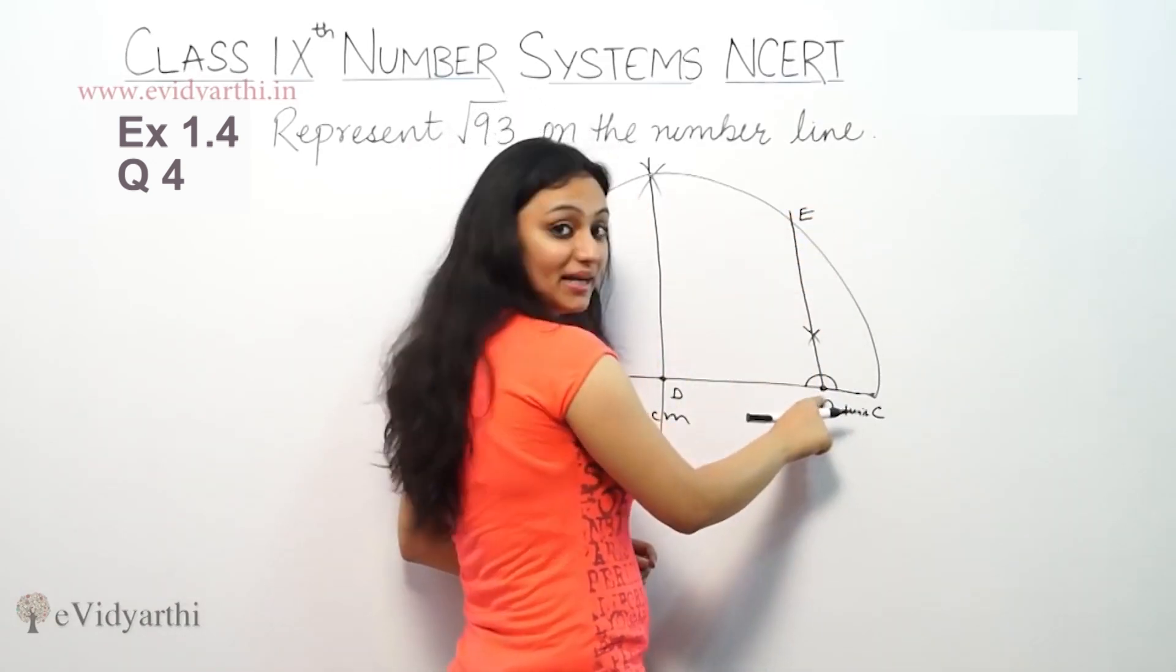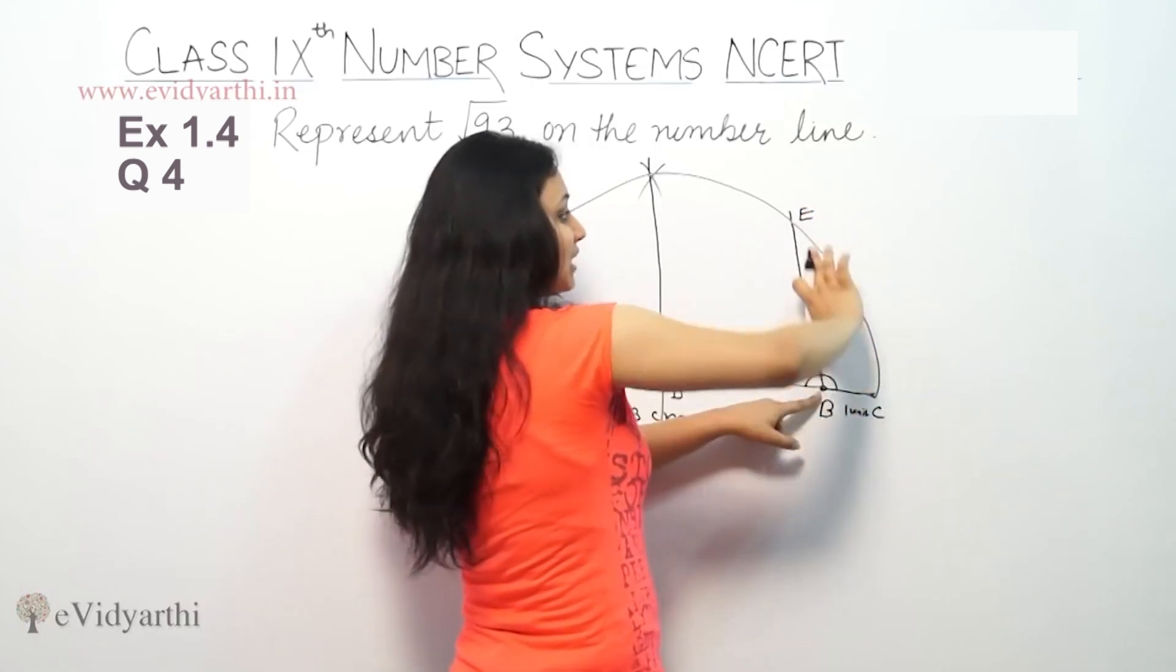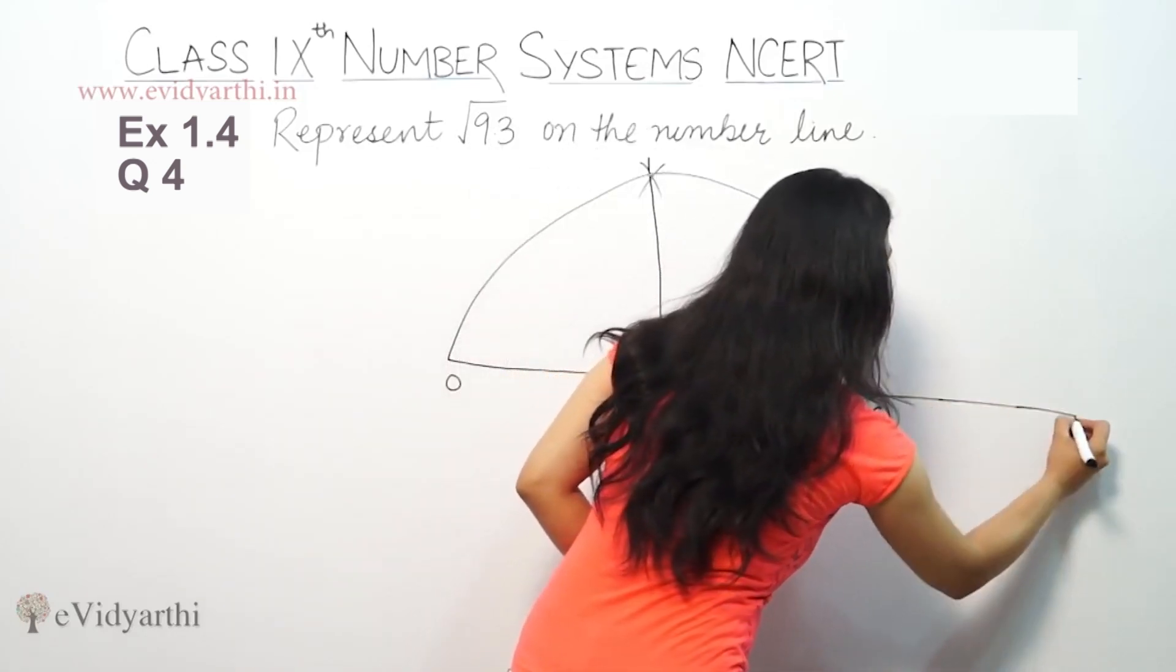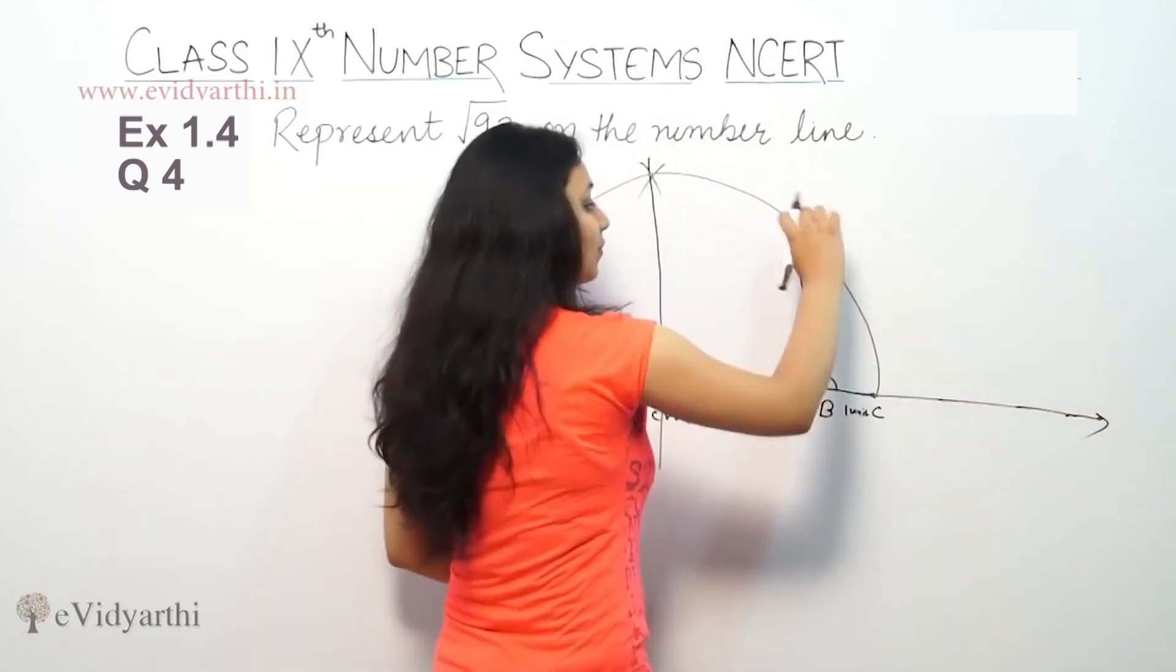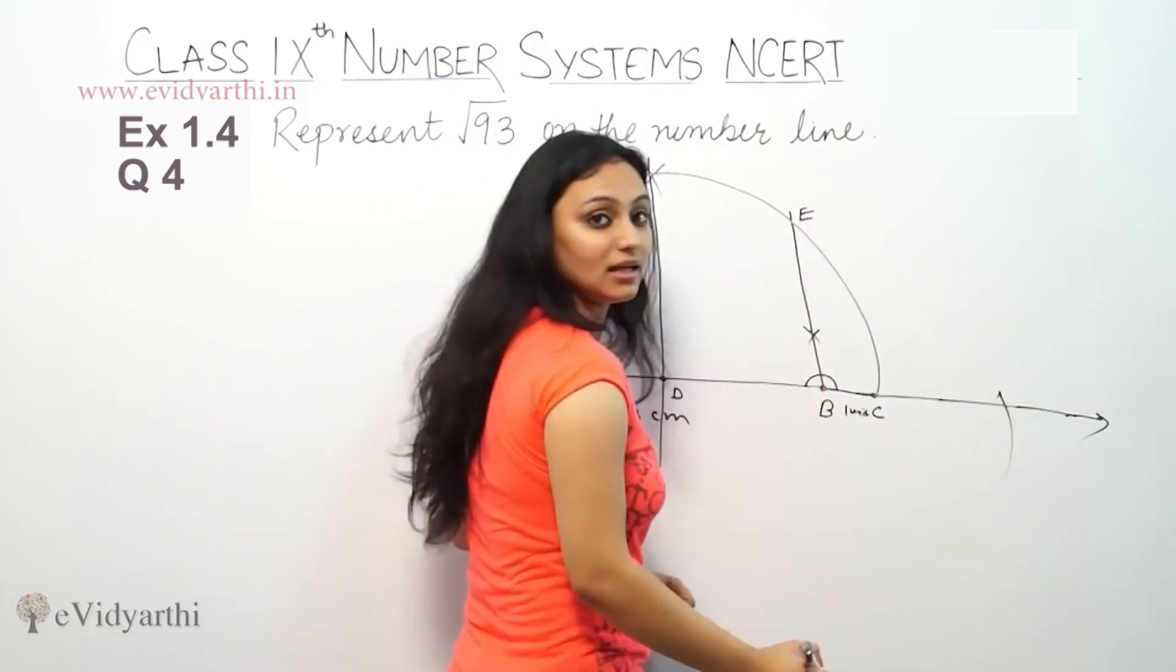Now taking BE as radius, and taking the compass from here and opening it to here, taking B as center and BE as radius, cut here. Extend the line. Extend this line. Open the compass this much and cut. Suppose it cuts here.